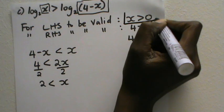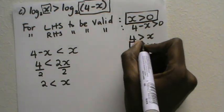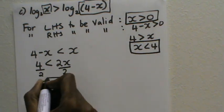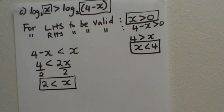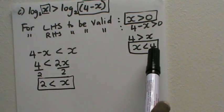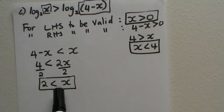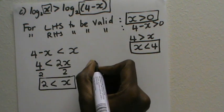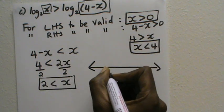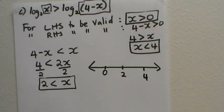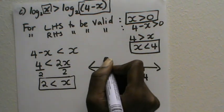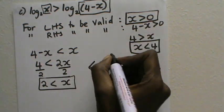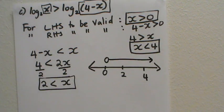Now I need to combine all three conditions: the first logarithm must be defined (x greater than zero), the second logarithm must be defined (x less than four), and the inequality must hold (x greater than two). I'm looking for numbers that are positive, less than four, and greater than two. I can represent all these on a number line with the key points zero, two, and four.